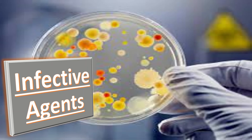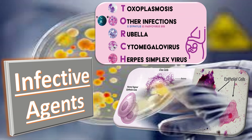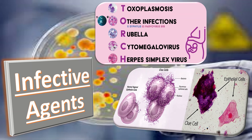Any severe infection leading to bacteremia or viremia can cause sporadic miscarriage. Organisms such as toxoplasmosis, rubella, cytomegalovirus, and herpes simplex virus are implicated, though TORCH testing is not routinely performed in recurrent miscarriage diagnosis. The presence of bacterial vaginosis in the first trimester has been reported as a risk factor for second-trimester miscarriages and preterm delivery, but evidence for its association with first-trimester miscarriages is inconsistent.